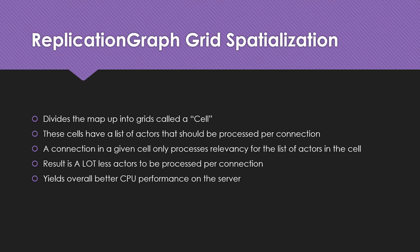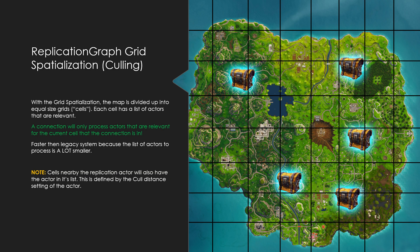The replication graph grid spatialization solves this by dividing the map up into different cells. These cells inherit from the replication graph actor list, so they're basically just a list of actors for each cell. A connection in a given cell will only process whether or not the actors in that cell's list are relevant or not. This results in far fewer actors to process per connection, yielding better CPU performance on the server.